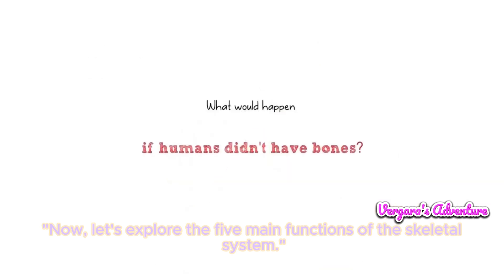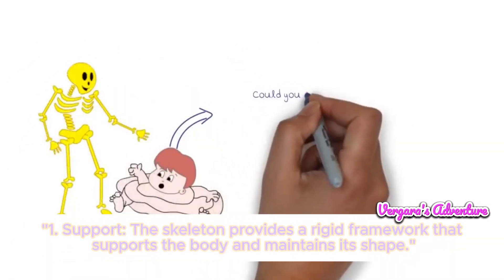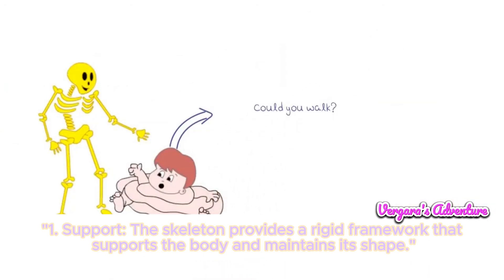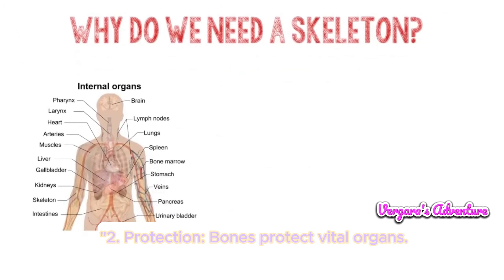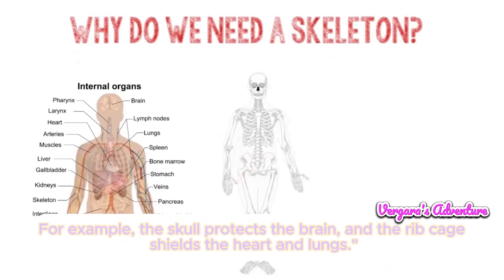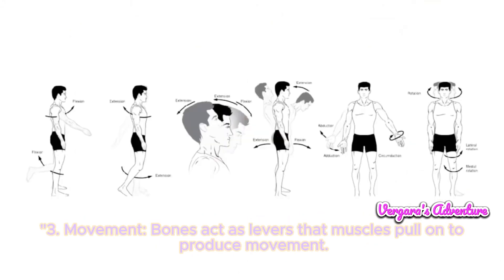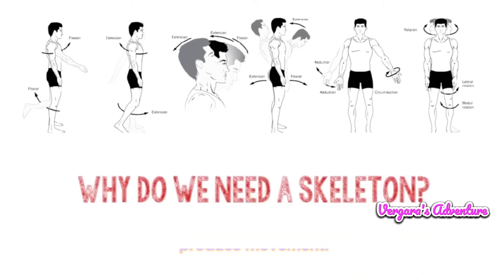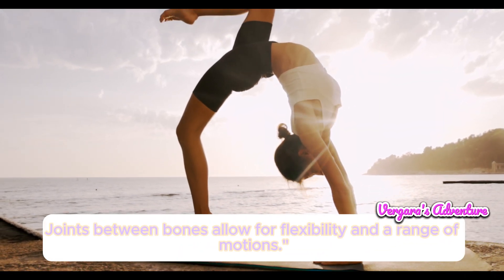Let's explore the five main functions of the skeletal system. First, support: the skeleton provides a rigid framework that supports the body and maintains its shape. Second, protection: bones protect vital organs — for example, the skull protects the brain and the ribcage shields the heart and lungs. Third, movement: bones act as levers that muscles pull on to produce movement, and joints between bones allow for flexibility and a range of motions.